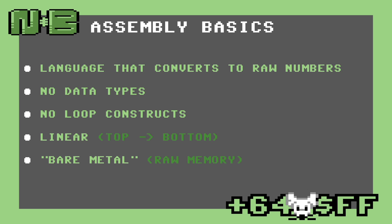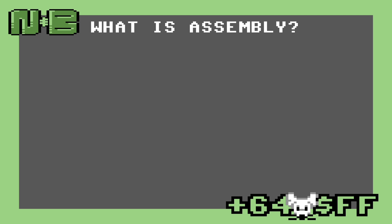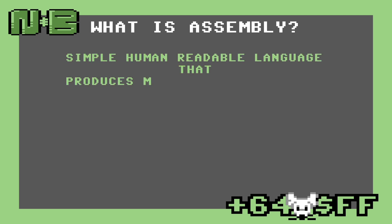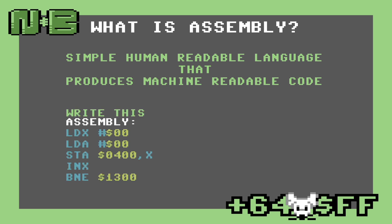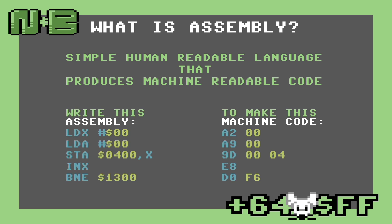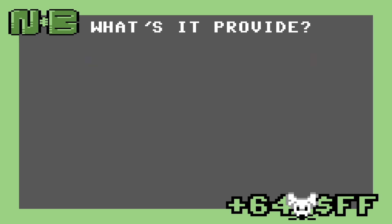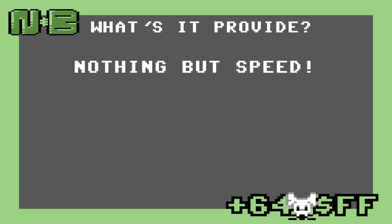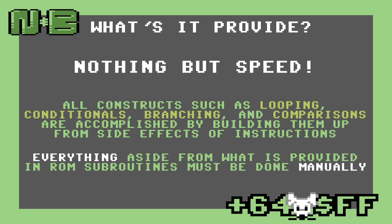Assembly is as bare metal as you can get since you're dealing with raw memory. So what is assembly, really? It's just a simple human-readable language that produces machine-readable code. In other words, it gives us, the programmers, something more readable than just raw numbers. And what features does it provide? Nothing save for speed. Everything you might want in a programming language has to be constructed by building them up from individual instructions.